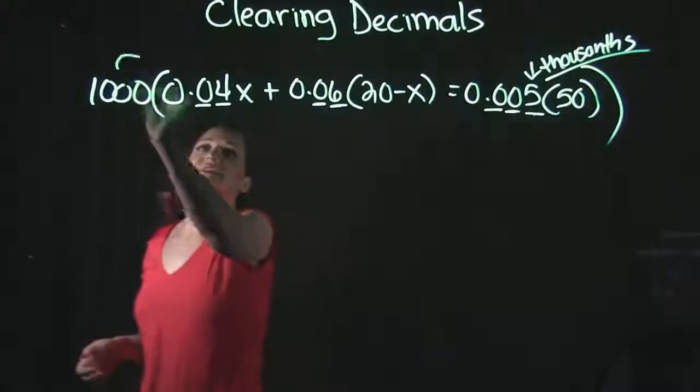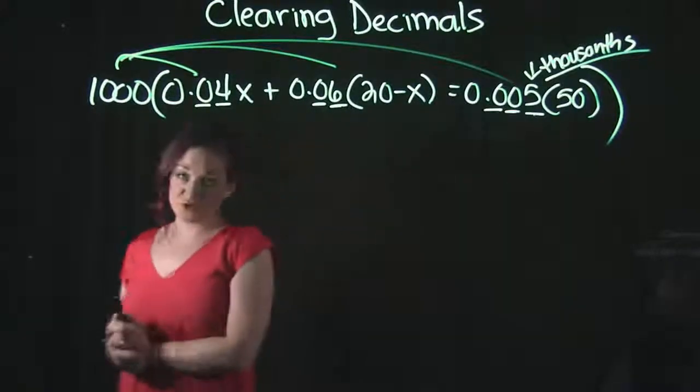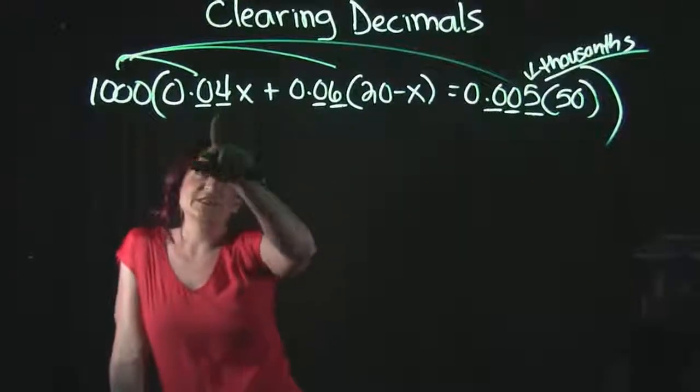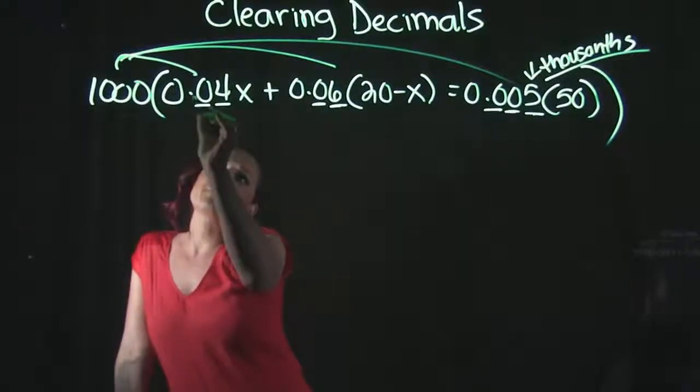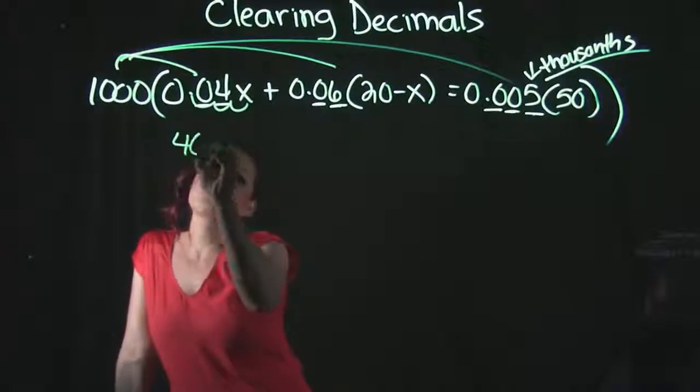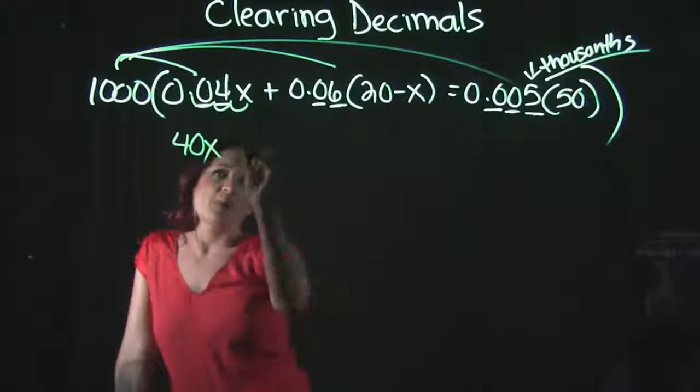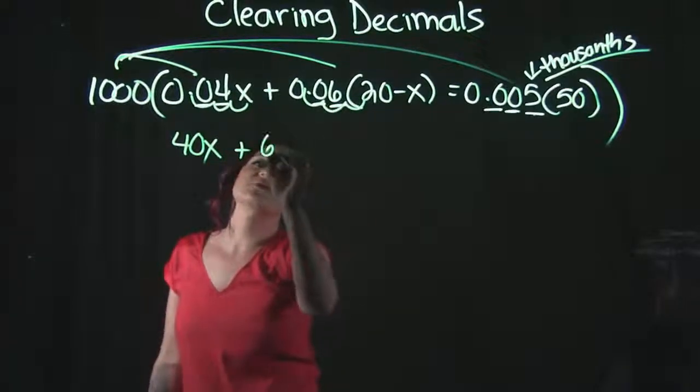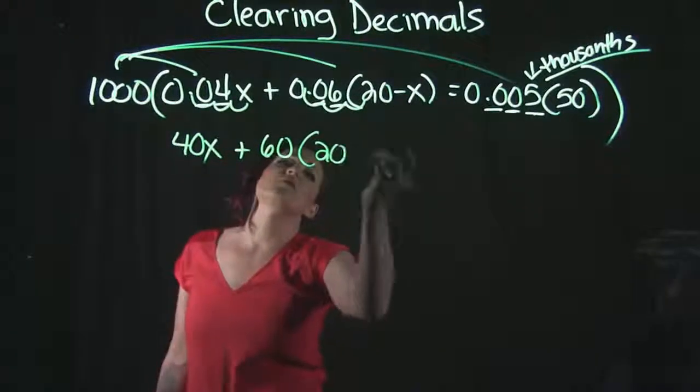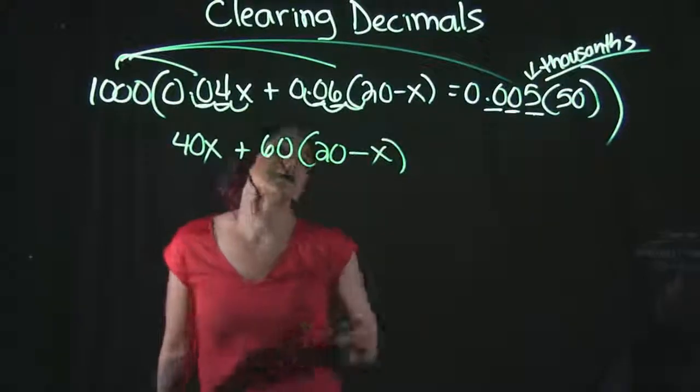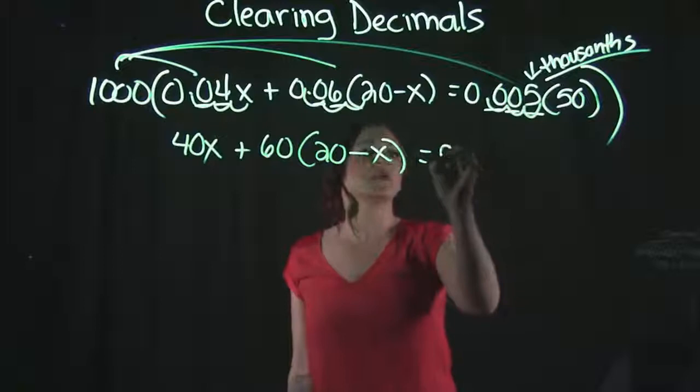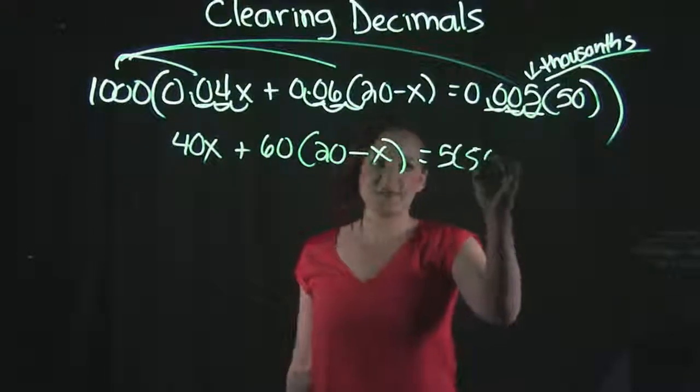So that means we need to distribute that thousand to all three terms. A thousand times the 0.04x, so that means we are going to have 40x, plus a thousand times this 0.06, is going to give us 60, and then our parentheses 20 minus x, is equal to, if we multiply by a thousand here, we're going to get five times that 50.